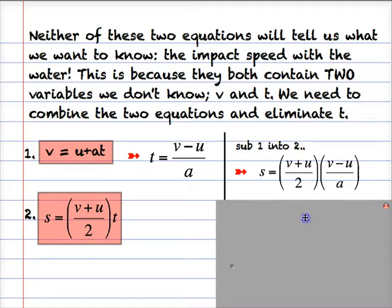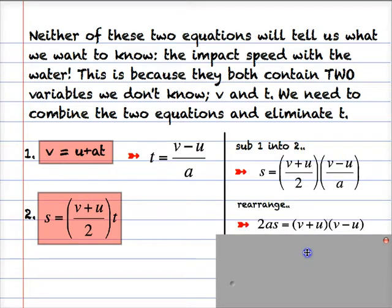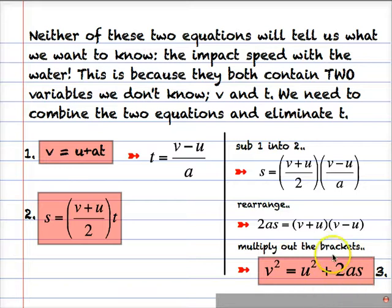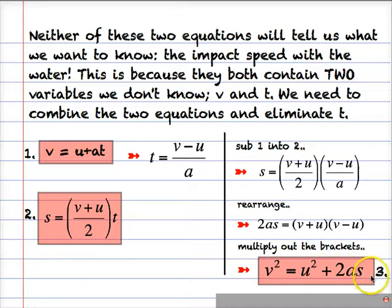I'm going to simplify and rearrange that, taking the 2 and the a over to the other side by multiplying through by 2 and a. Then I multiply out the brackets, and this is what I get. This is my third equation of uniformly accelerated motion: v² = u² + 2as. You can see that t has vanished. I now only have v, u, a, and s. I want to know v; u is the starting velocity which is 0; a is the acceleration I know; and s is the height of the board which I also know.